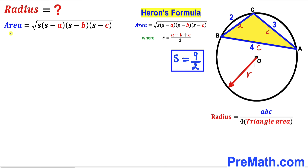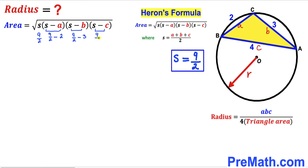Now we are going to calculate the area of triangle ABC by substituting these values into the formula. Our S value is 9/2, and we compute: 9/2 times (9/2 minus a, which is 2) times (9/2 minus b, which is 3) times (9/2 minus c, which is 4).